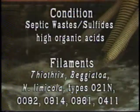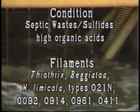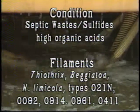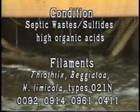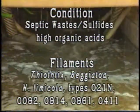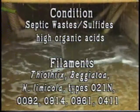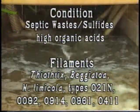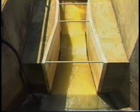Thiothrix 1 and 2, Beggiatoa, Nostocoida limicola, and types 021N, 0092, 0914, 0961, and 0411 are caused by septicity, where organic acids and sulfides are high in concentration. These filaments use organic acids and some sulfides as food for growth. Septic conditions can occur in the collection system, the treatment process itself, or the influent wastewater from some industries. Treatment of septage can also cause bulking and foaming by these filaments.